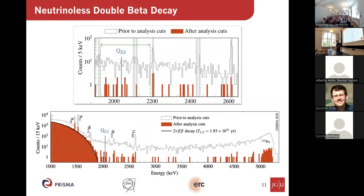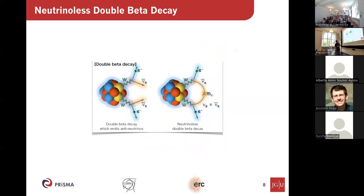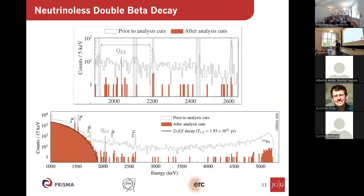These nuclear matrix elements cannot be measured other than by measuring neutrinoless double beta decay — they really have to come from theory, and these are large nuclei: 76 or 136 nucleons, a highly non-trivial many-body problem. Various approximations exist but the spread in their predictions is large. Neutrinoless double beta decay favors two very nearby nucleons decaying simultaneously, whereas in two-neutrino double beta decay the two decaying nucleons could be on opposite sides of the nucleus. So these matrix elements depend on short-range interactions between the decaying nucleons, whereas the two-neutrino case also feels longer-distance effects — which is why it's impossible to directly measure the relevant matrix elements.